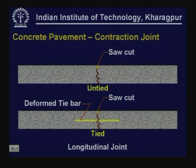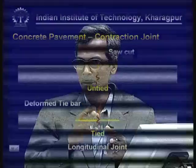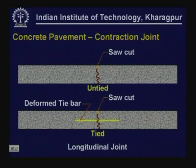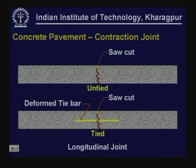There is another type of contraction joint. The one shown above is an untied or undoweled contraction joint — basically only a socket is made which is followed by development of a crack. The one shown at the bottom is a socket followed by a crack, but here what we see are tie bars inserted into the concrete while it is being placed. These are deformed tie bars, whereas dowel bars are smooth.